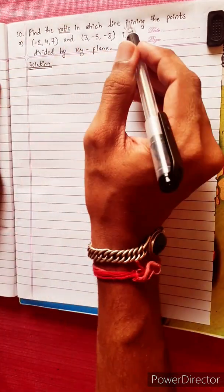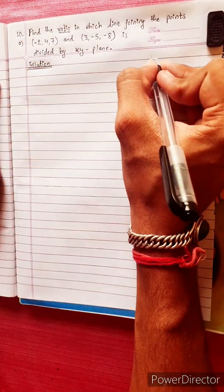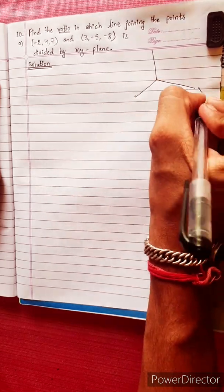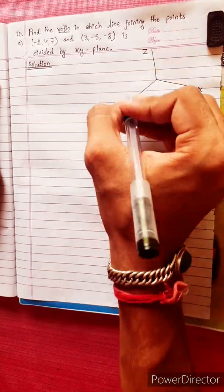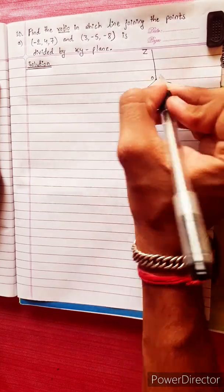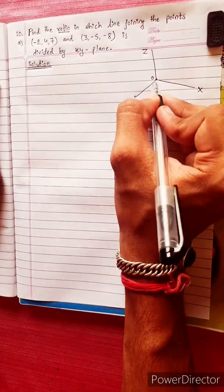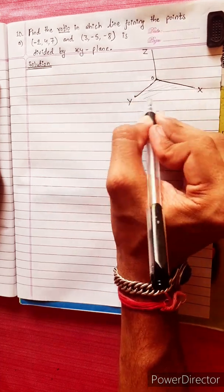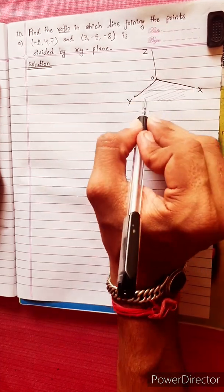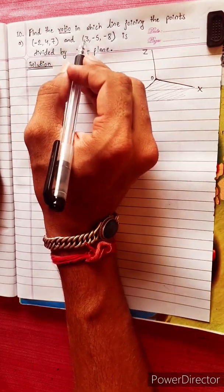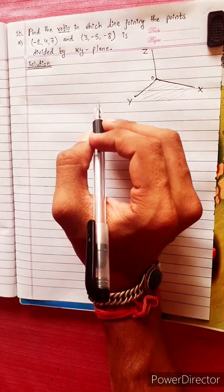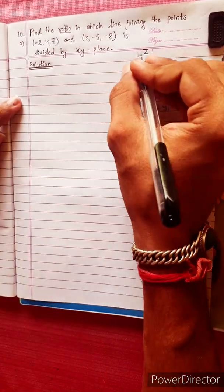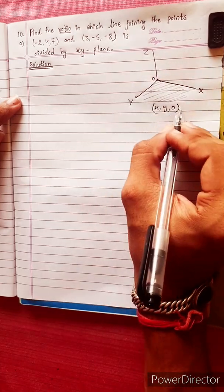Find the ratio in which the line joining the points is divided by the XY-plane. The x-axis, z-axis, y-axis, and origin are 0. The XY-plane means the plane containing x and y coordinates. In the XY-plane, the x-coordinate and y-coordinate are present, but the z-coordinate is zero.